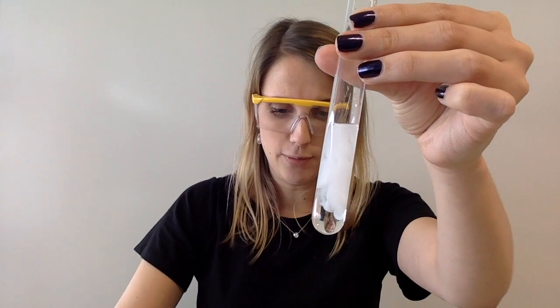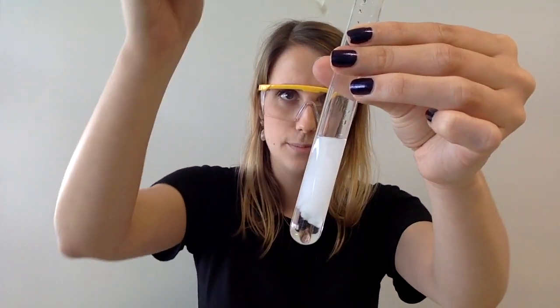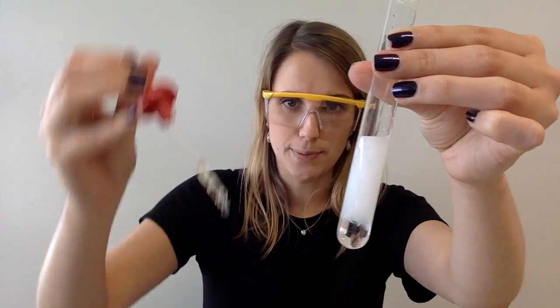So hopefully what you can see is this is giving me a nice bright white precipitate, and that indicates the presence of sulfate ions.